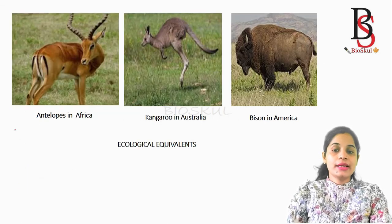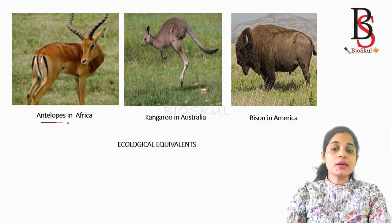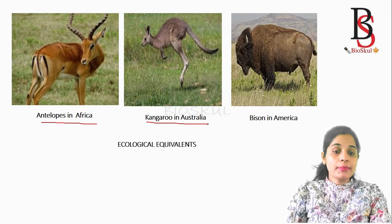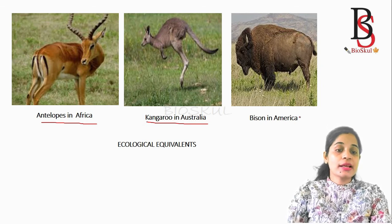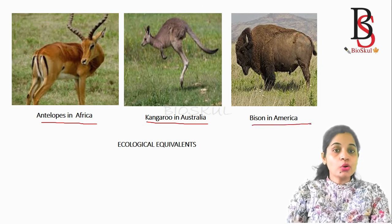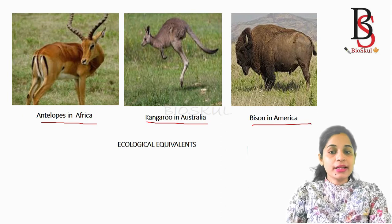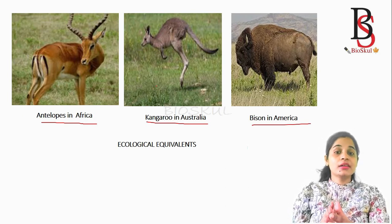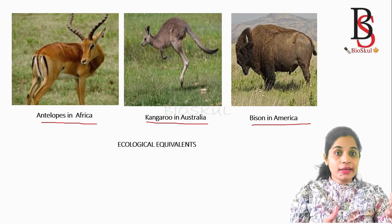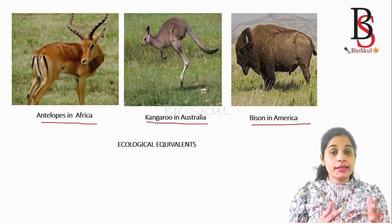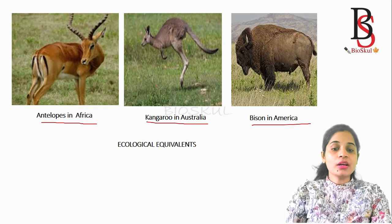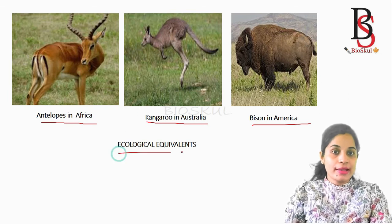The antelope is present in the grassland of Africa, kangaroo is found in the grassland of Australia, and bisons in the grassland of America. Though they are present in similar ecological niches, they are from widely separated geographical regions, are taxonomically different from each other, and together they form ecological equivalence.